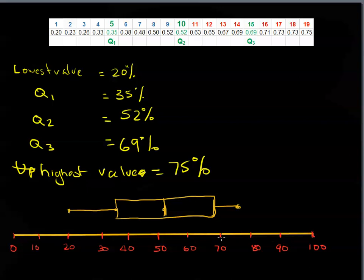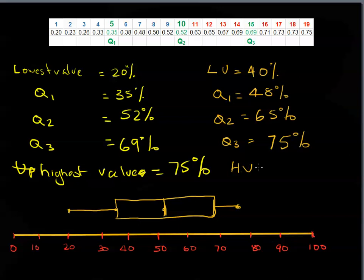This is useful, but say we had another class that sat the same test. Their lowest value was equal to 40%. Their quartile 1 was equal to 48%. Quartile 2 was equal to 65%. Quartile 3 equal to 75%. And the highest value was equal to 80%.